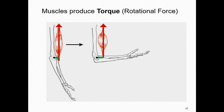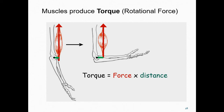Muscles produce torque at a joint — a torque is simply a rotational force. Here we see elbow flexion resulting from the contraction of the biceps, caused by the joint torque — that is, the rotational force acting at the elbow. A torque is calculated as force times distance. To understand the joint torques acting at the elbow joint, we need to know the forces acting and how far from the point of rotation those forces are acting. The force, illustrated with a red arrow, results from the line of action of the biceps pulling up on the radial tuberosity. As the elbow flexes, the distance from the point of rotation to the line of action of the force vector — illustrated with the green line — changes.